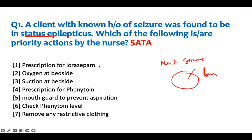First answer: prescription for lorazepam — yes. You need something that can acutely break the cycle. Lorazepam is a benzodiazepine. It's the treatment of choice. This is used for acute situations, and we have an acute situation. We need something that can take care of an acute problem. Therefore, this is correct.